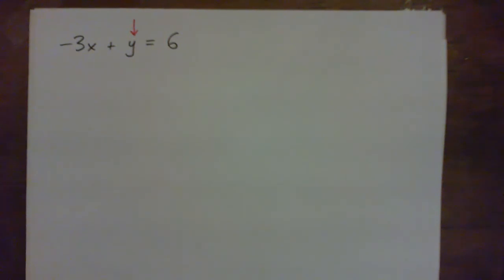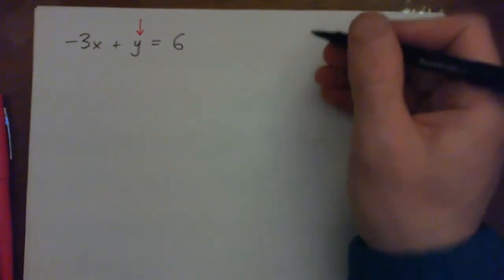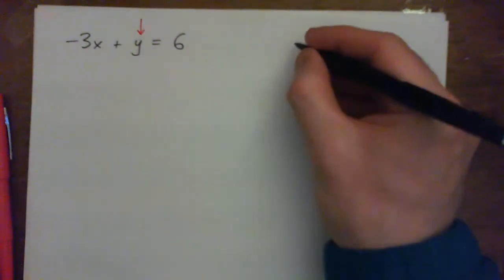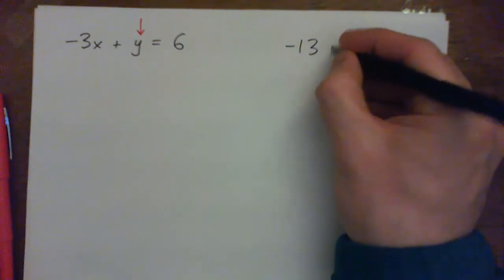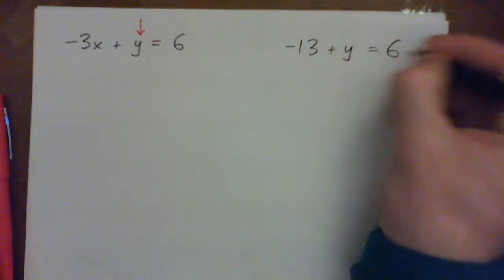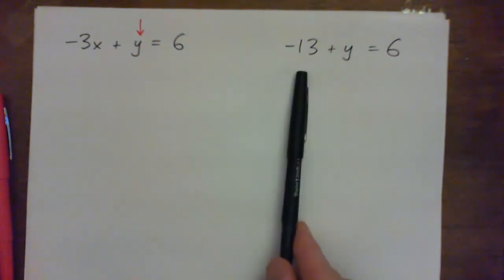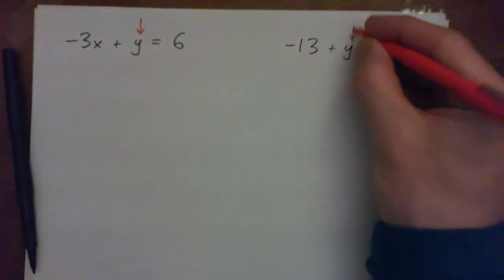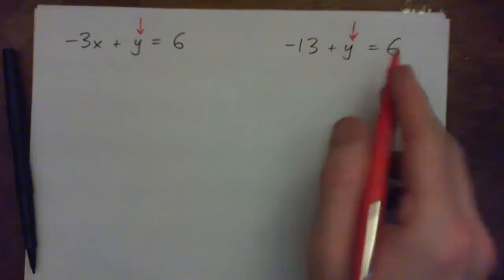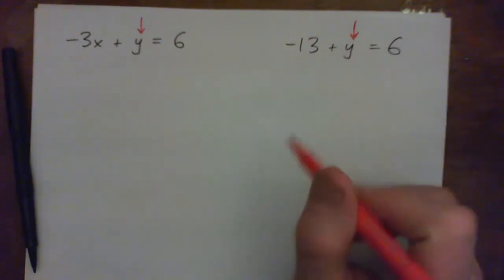If you're stuck let me just give you a clue. What if we had something like, let's say you just had negative 13 plus y equals 6. How would you get rid of that negative 13? What would you do when you were solving for y? Just try to solve this one for y. What if you had negative 13 plus y equals 6?